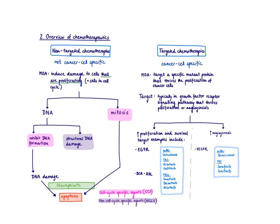Once the DNA is damaged, there are several checkpoints in the cell cycle that will recognize that something is wrong and drive the cell into apoptosis. The common mechanism of all non-targeted chemotherapies is to do some damage to either DNA or to interfere with mitosis, and checkpoints pick that up and drive the cell into apoptosis.